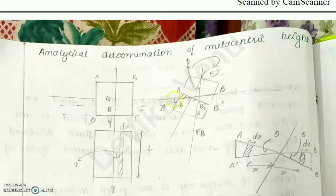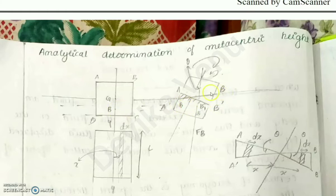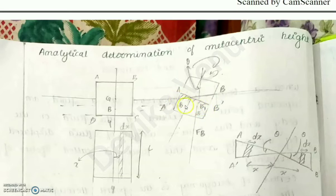When the tilt is given, the shape of the portion immersed in the liquid changes. This mesh portion came out from the liquid and this mesh portion got immersed inside — named A-A dash and B-B dash. The initial center of buoyancy was B. Now this trapezoidal area is inside the liquid, so the center of buoyancy shifted from B to B1. The centroid of this immersed trapezoidal portion is B1.